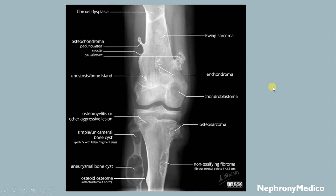This picture shows different types of bone tumors: Ewing's sarcoma, enchondroma, chondroblastoma, osteosarcoma, and osteochondroma.